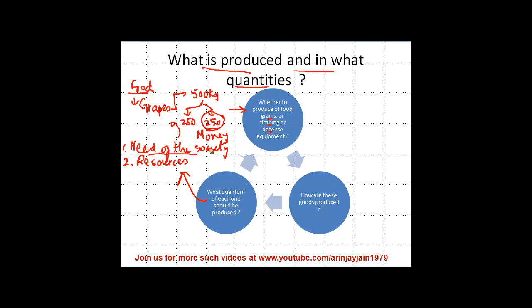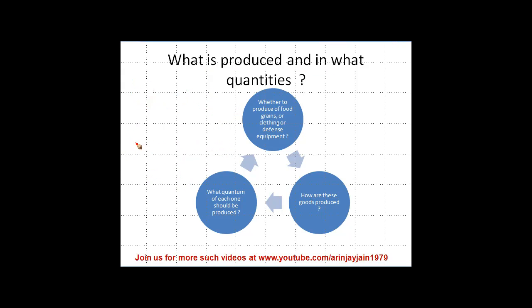So the most important thing is the need of the society and then the resources. Obviously, if you have some amount of land which cannot be used to grow grapes, then the question does not arise. What are the resources at your hand? So these will determine as to what quantum of each good has to be produced.